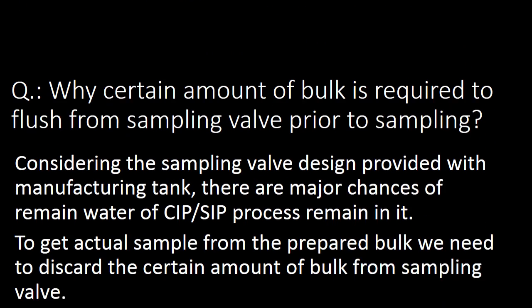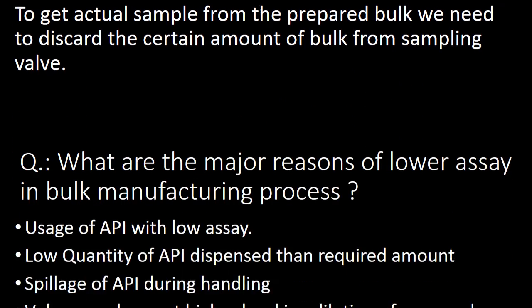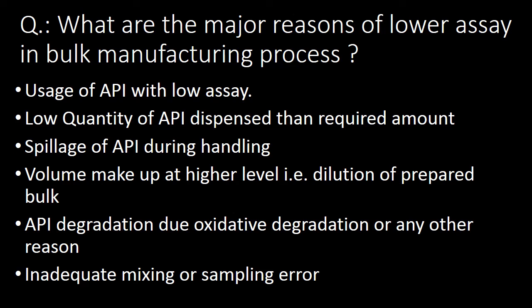Next question: why is a certain amount of bulk required to be flushed from the sampling valve prior to sampling? Considering the sampling valve design provided with the manufacturing tank, there are major chances that residual water from SIP or CIP process remains in it. To get an actual sample from the prepared bulk, we need to discard a certain amount of bulk from the sampling valve.